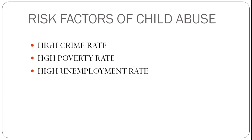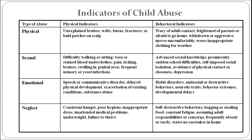Risk factors of child abuse include the high crime rate, the high poverty rate and high unemployment rate. Regarding indicators of child abuse, we shall discuss the type of abuse, the physical indicators and the behavioral indicators. Under physical abuse, unexplained bruises, welts, burns, fractures or bald patches on scalp are physical indicators.